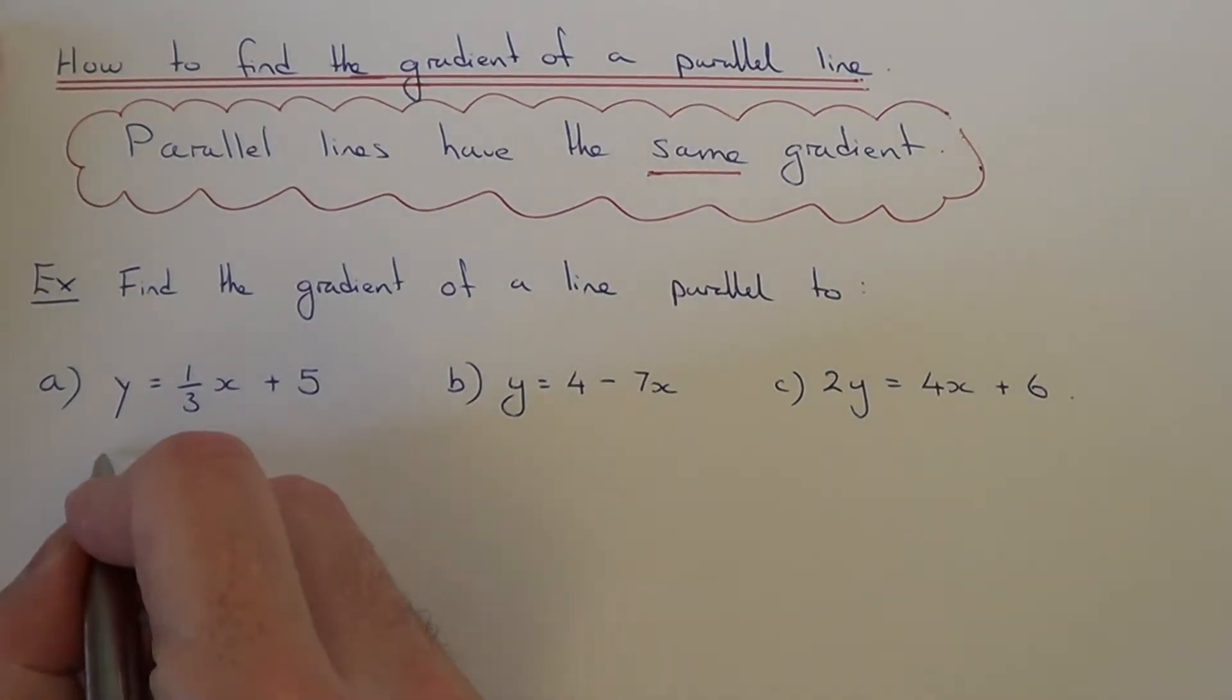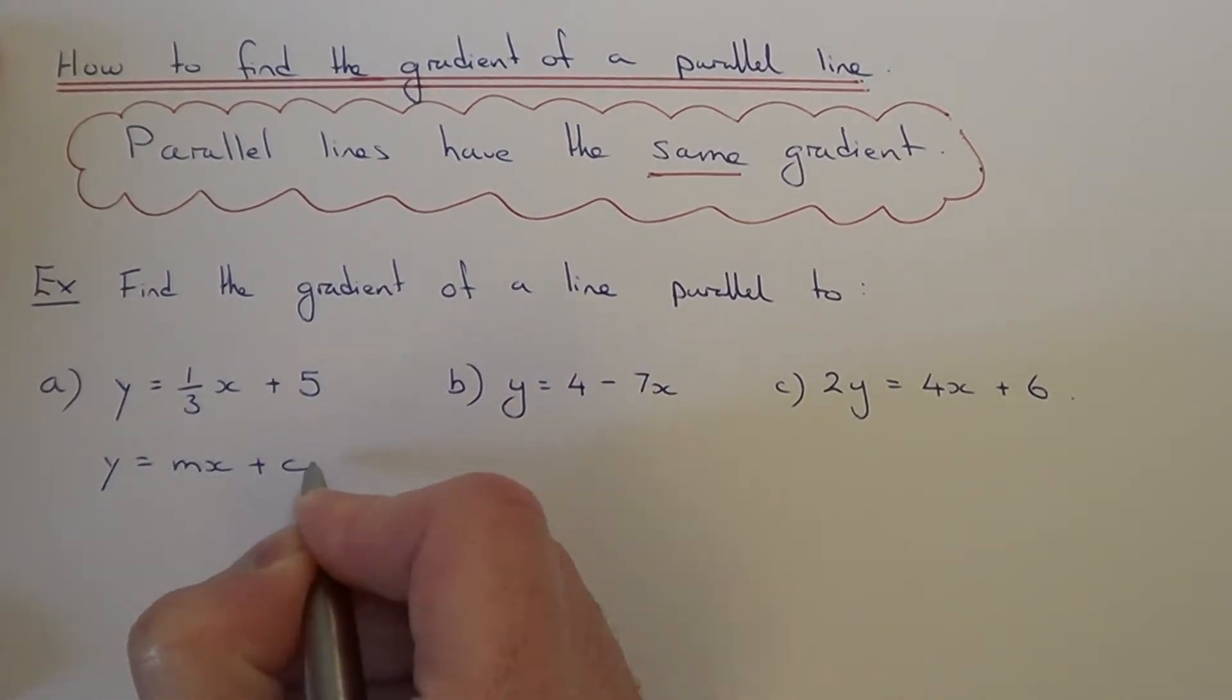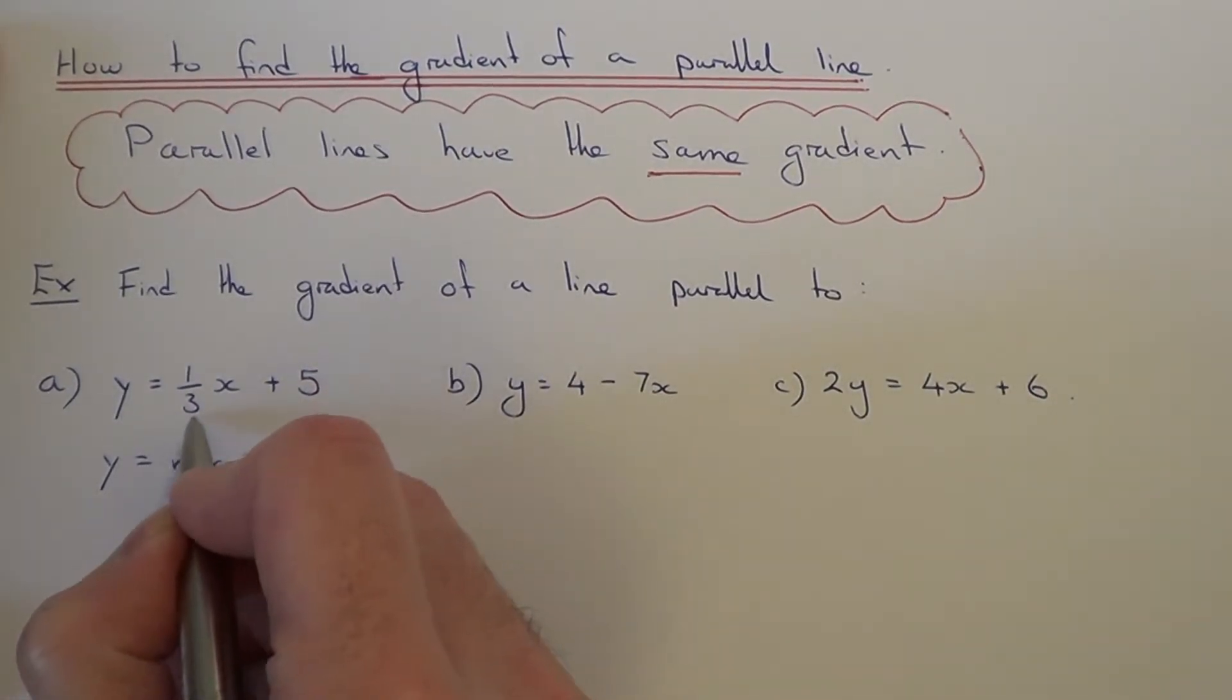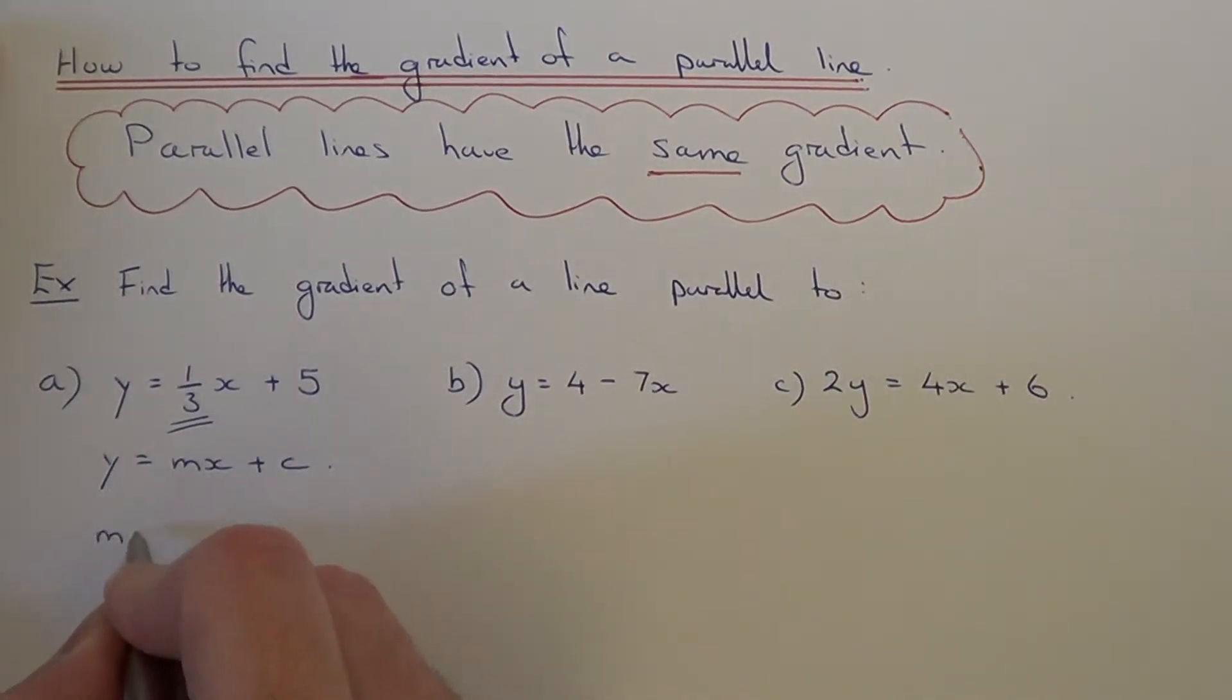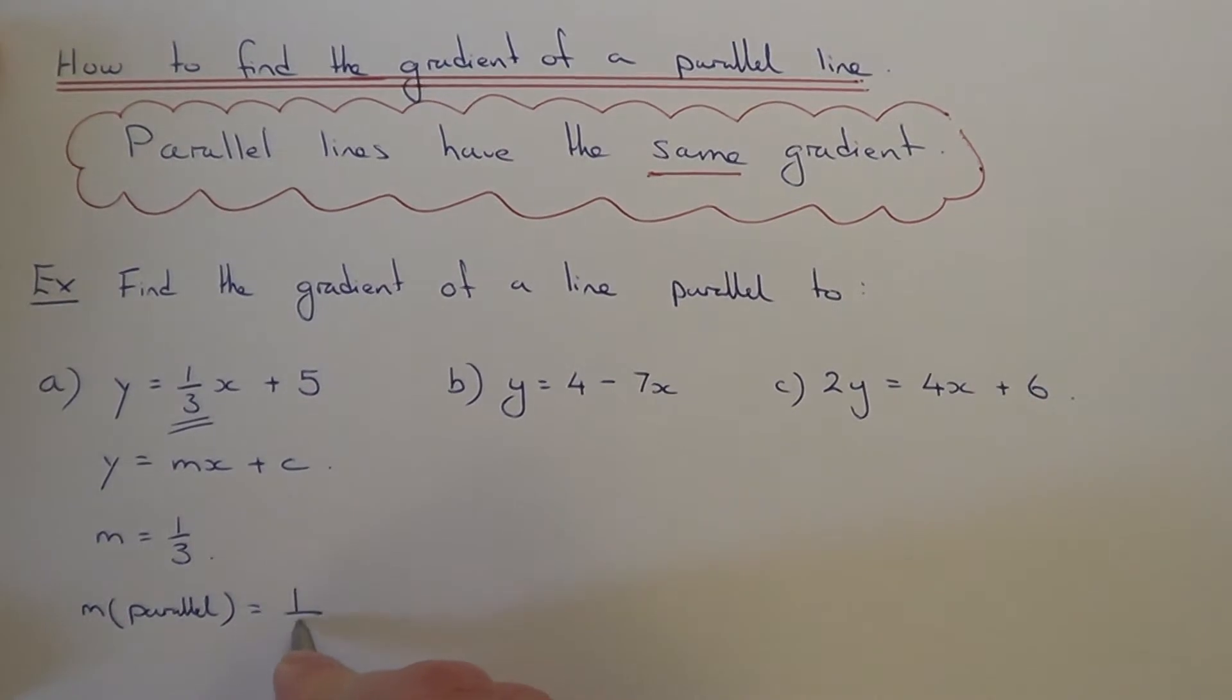The first thing we have to do is make sure that the equation we have is in the form y equals mx plus c. And the gradient of this first line then is the number before x. So the number before x is one third. Therefore, if parallel lines have the same gradient, then the gradient of a line which is parallel to this first one will also be one third.